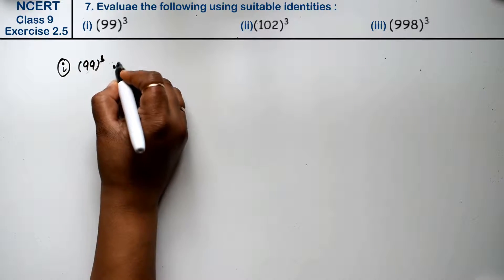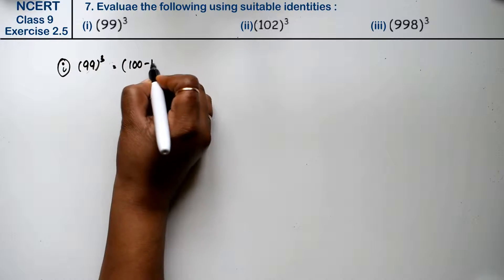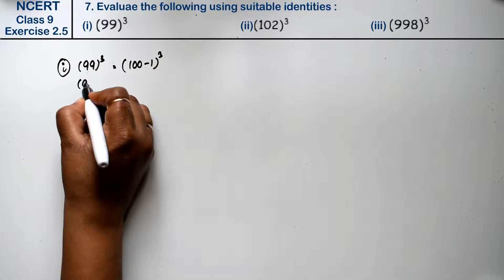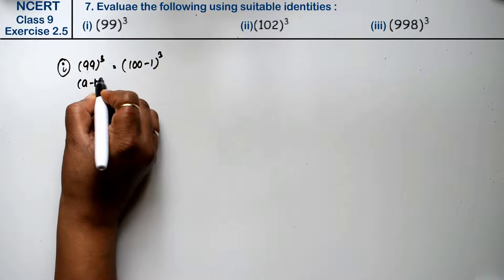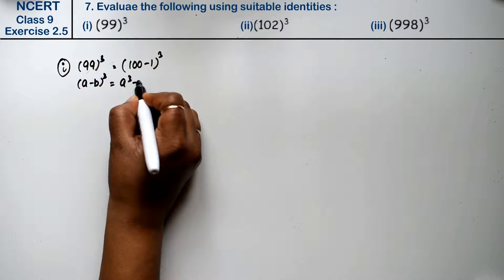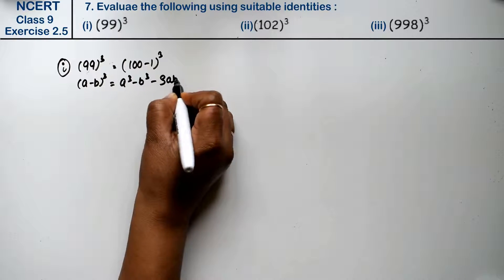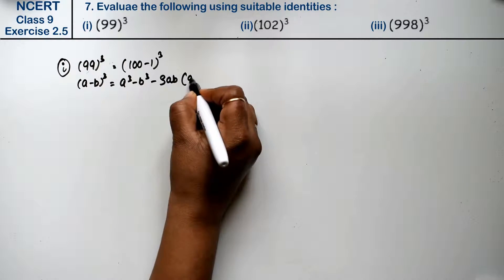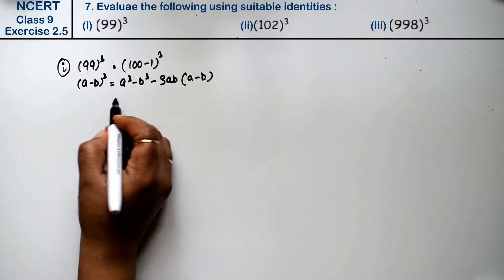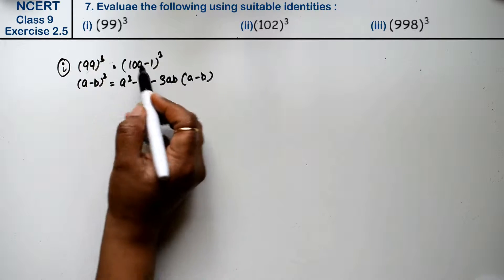What can we write 99 as? We can write it as (100 minus 1) whole cube. Now this is A minus B whole cube. So what is it? A cube minus B cube minus 3AB times (A minus B). This formula is called an identity. Right?